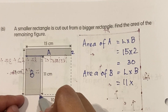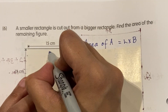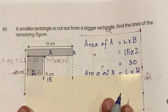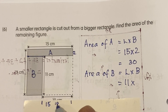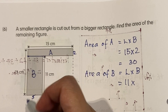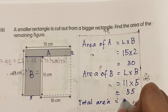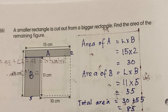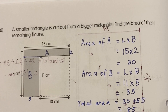Now let's find the breadth for B. This whole length from there to the side is 15. I push it down — that's my first marking. I know from here to here is 10, so total length is 15. So 10 plus 5 equals 15, meaning this is 5. So Area B is 11 times 5, which is 55. Total area equals 30 plus 55 — that's 85 square centimeters.